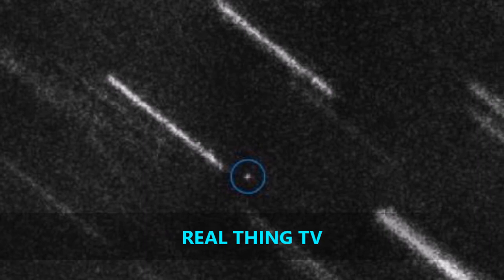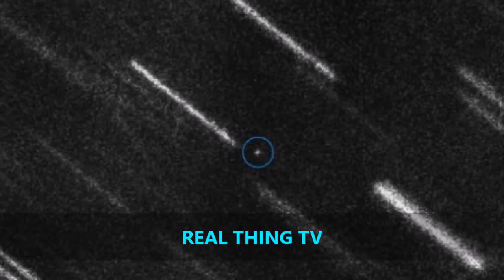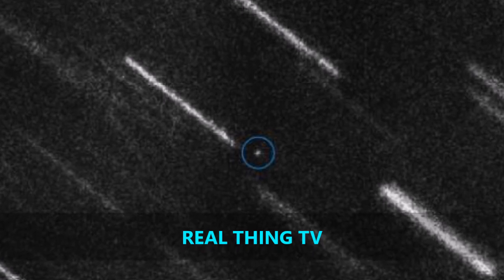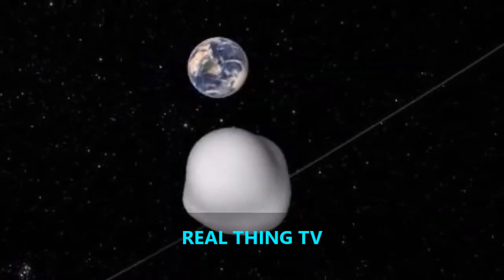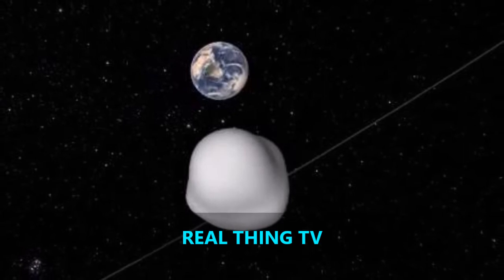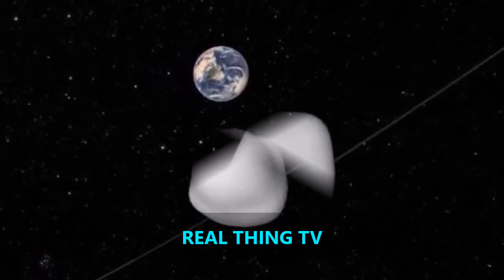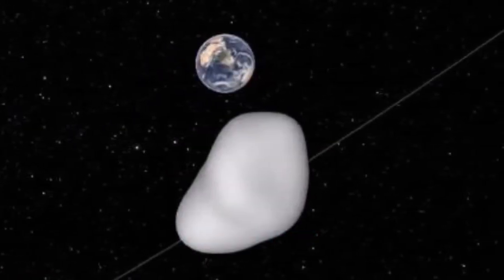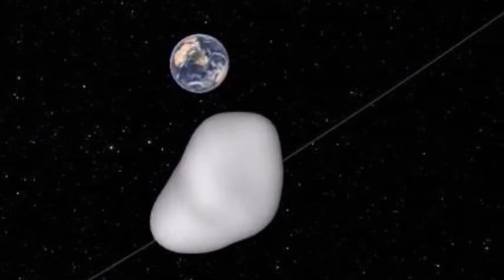A 20 meter near-Earth asteroid entered Earth's atmosphere over Russia on February 15, 2013, causing a meteor explosion. Chelyabinsk was the largest meteor recorded since the 1908 Tunguska event and resulted in more than a thousand injuries and widespread damage to buildings in the area.